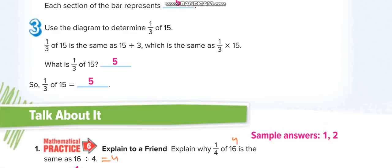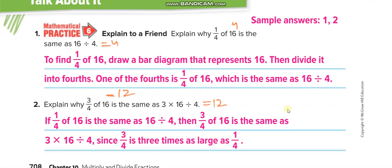Explain why 1/4 of 16 is the same as 16 divided by 4. Because 1/4 of 16 is 4, and 16 divided by 4 is 4. And the numerator is just 1, so that's why it is equal to 4. 3/4 of 16 equals 12. As I told you, multiply your whole number with the numerator, 3 times 16, and then divide it by the denominator, you'll get 12.